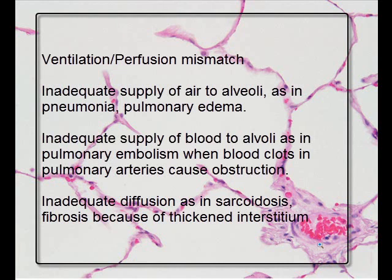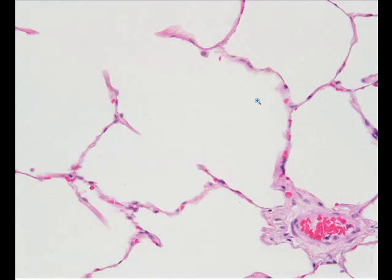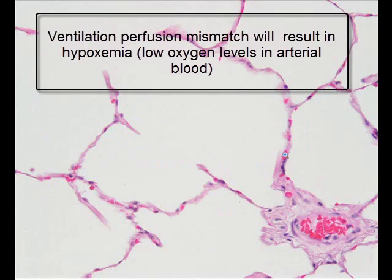Ventilation refers to the adequate supply of air to the alveoli of the lungs. Perfusion refers to the adequate supply of blood to a tissue — in this case, lung tissue. Diffusion is the ability of gas to pass through the alveolar-capillary membrane to reach the red blood cells, for oxygen to be absorbed and carbon dioxide to be removed from the blood. This is a good occasion to describe some of the common conditions of the lungs.